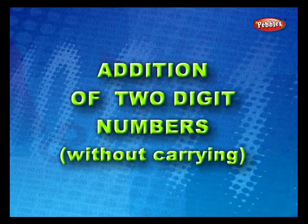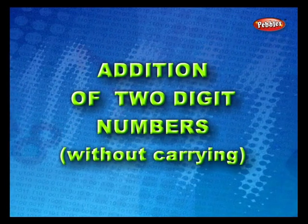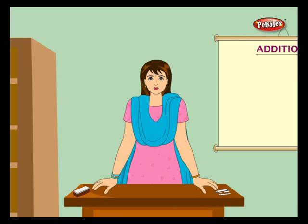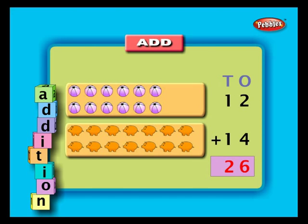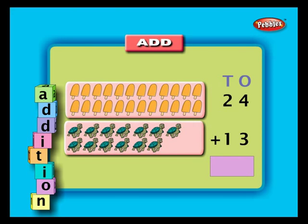Addition of two-digit numbers without carrying. Come on children, let us add both these numbers: 12 balls and 14 piggy boxes. Arrange the numbers in a column. Add ones first — four plus two is equal to six. Write six below the ones column. Now add tens — one plus one is two. Write two below the tens column. So the answer is 12 plus 14 is equal to 26.